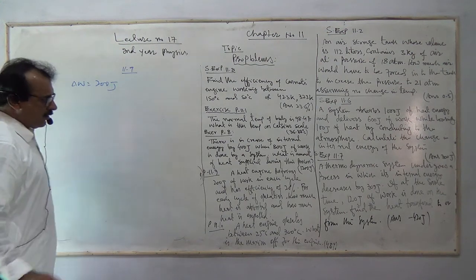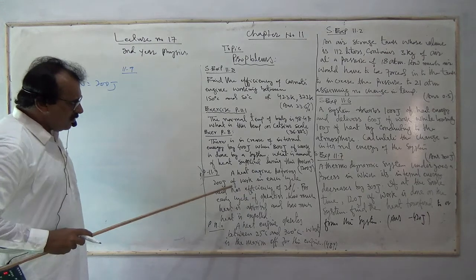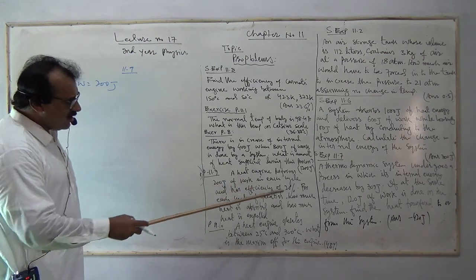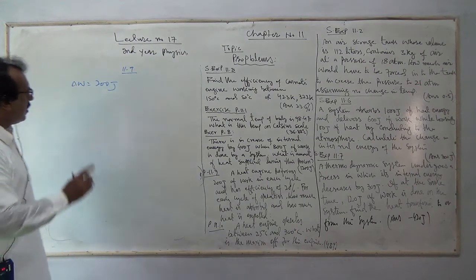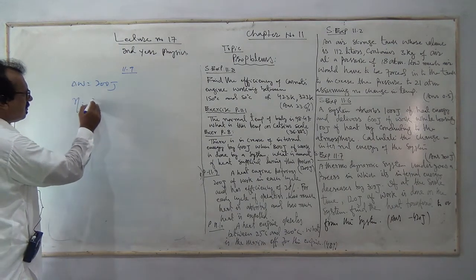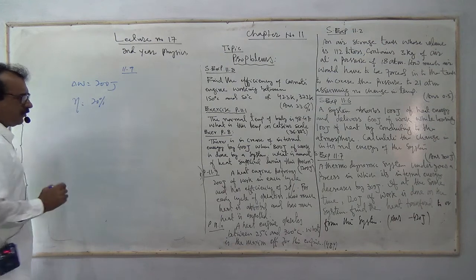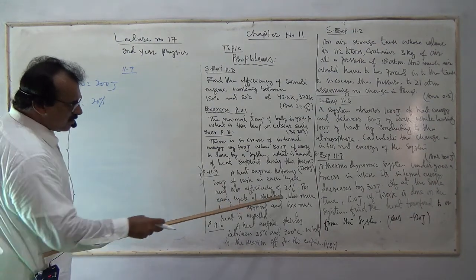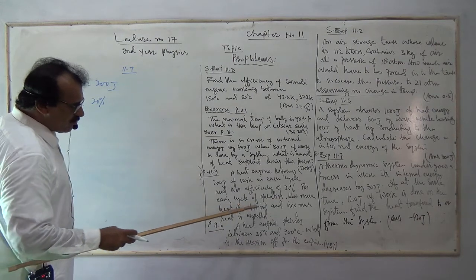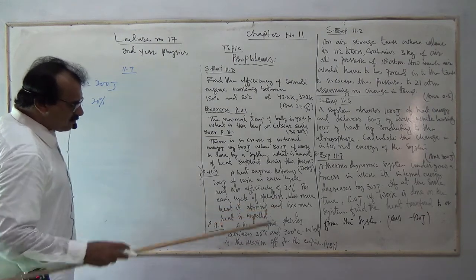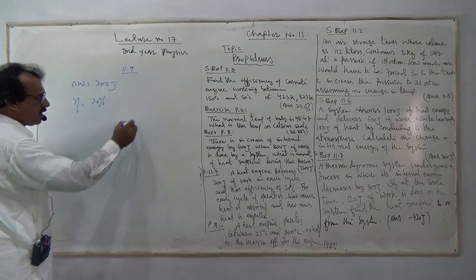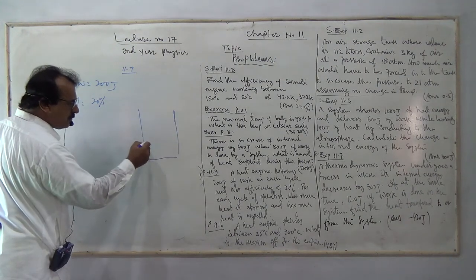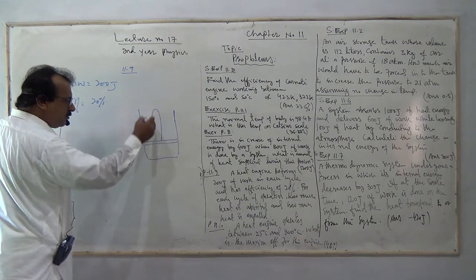Exercise problem number 11.9: A heat engine performs 200 Joules of work in each cycle and has an efficiency of 20 percent. For each cycle of operation, how much heat is absorbed and how much heat is expelled?